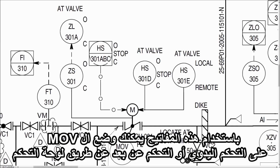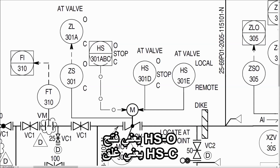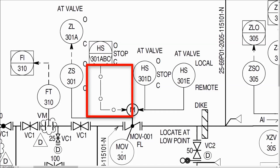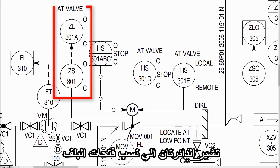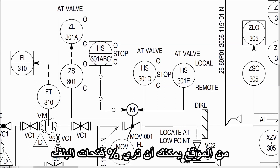That means on panel control. You can also start or stop the valve from the field. HS means open; HS means close. The data link indicates this valve is connected to the control panel. The last two instrument bubbles show the position of the valve — from the field, you can set and see the percentage of the valve opening.